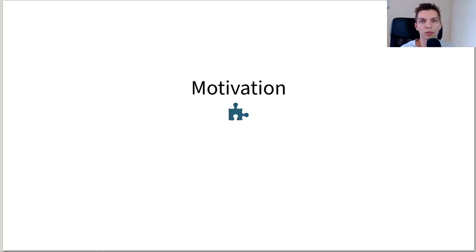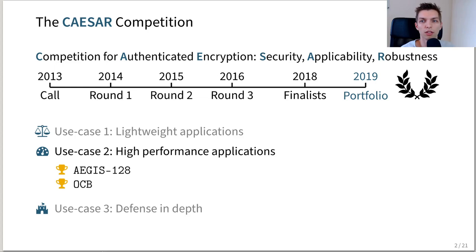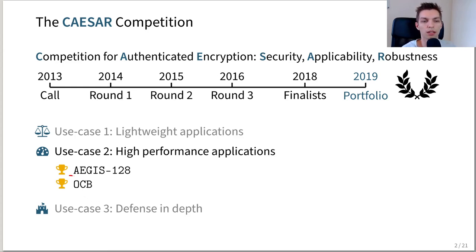Why did we analyze Aegis? Most of you have heard about the CAESAR competition, which aimed to find authenticated encryption schemes. When it concluded in 2019, Aegis was selected as part of the final portfolio for use case 2: high-performance applications.